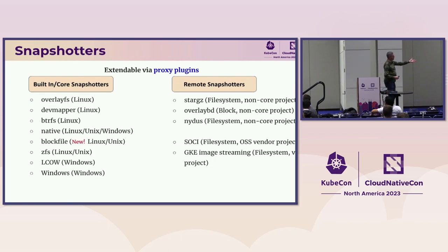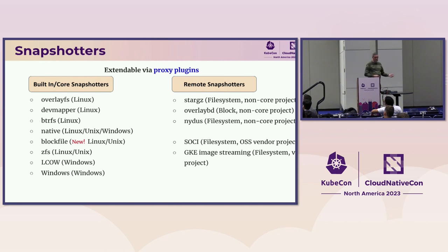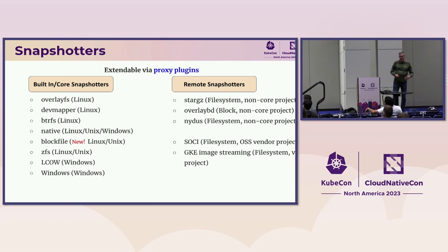There's a ton of built-in core snapshotters, many of them since the start of the project, but blockfile is a new one. The remote snapshotters — extensible by being proxied into the project — include stargz, OverlayBD, Nydus, Soci which we open-sourced, and GKE also has their image streaming built around the same remote snapshotter technology. If you have an interesting idea or use case, you can extend and create your own snapshotter.